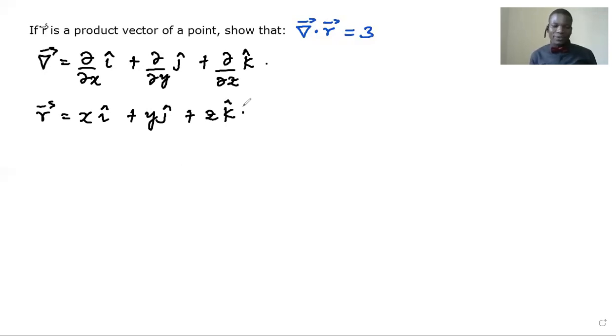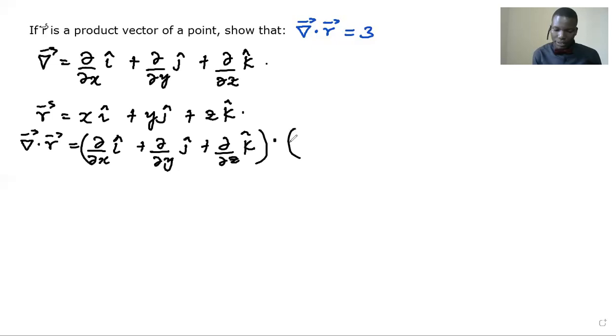And then now we need to dot these two. So once we dot, right, we have x i, this is nabla. So this is a bit different from the previous video that we solved. It was not dotting. That was not the dot product. So we are dotting R, which is this.